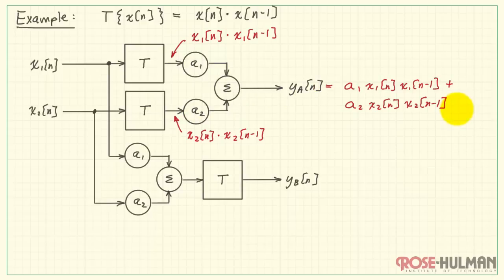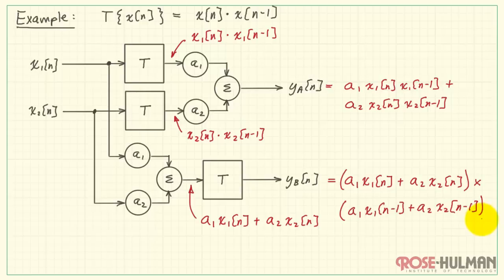And then we do the pre-scale and sum technique and pass that through the system. Now the system says take whatever is coming in on the input and multiply it by whatever came in on the previous time step. This would be the result for our current input. And then we multiply by the previous input. So we see that same input but delayed by a value of one sample.